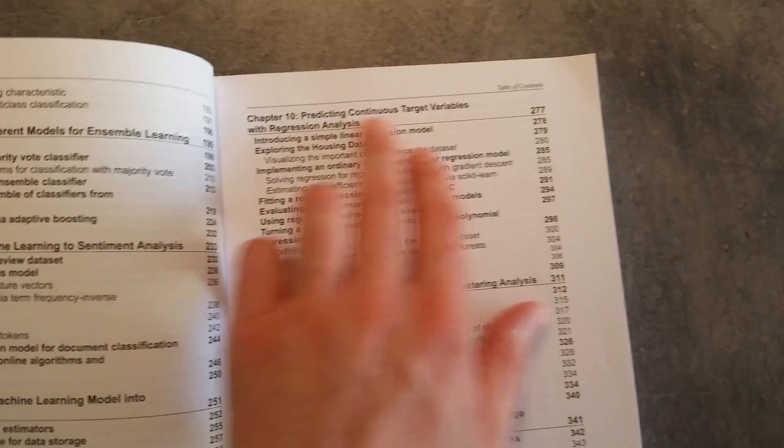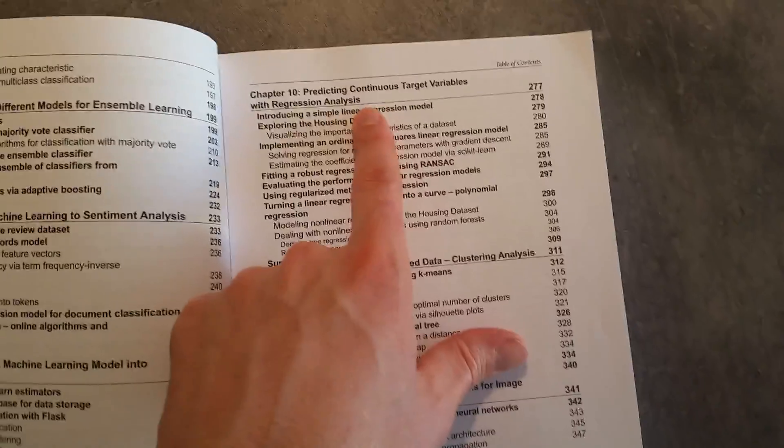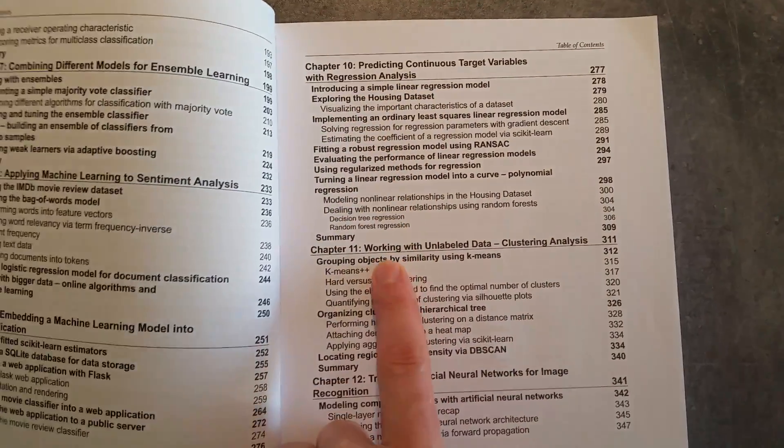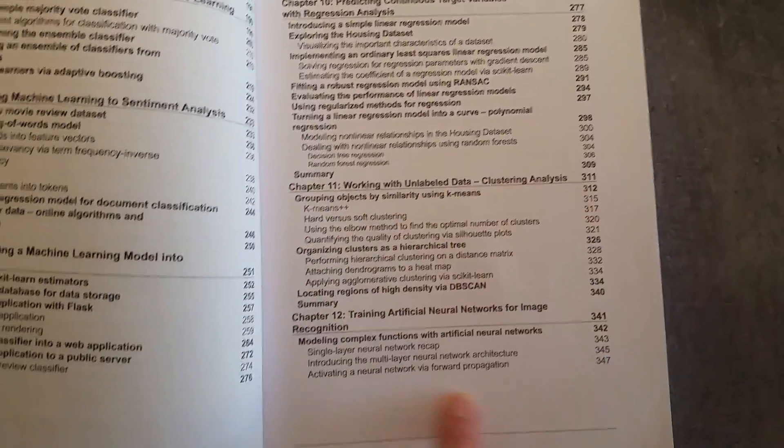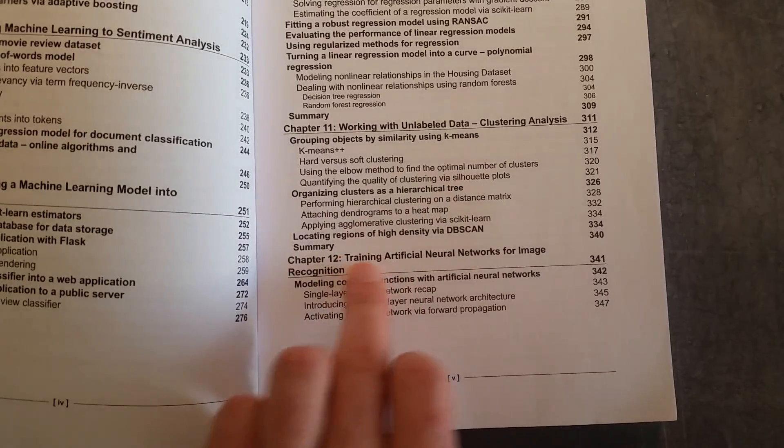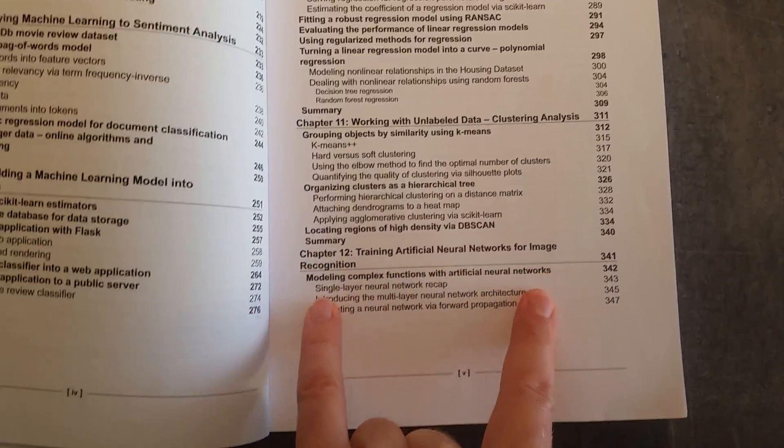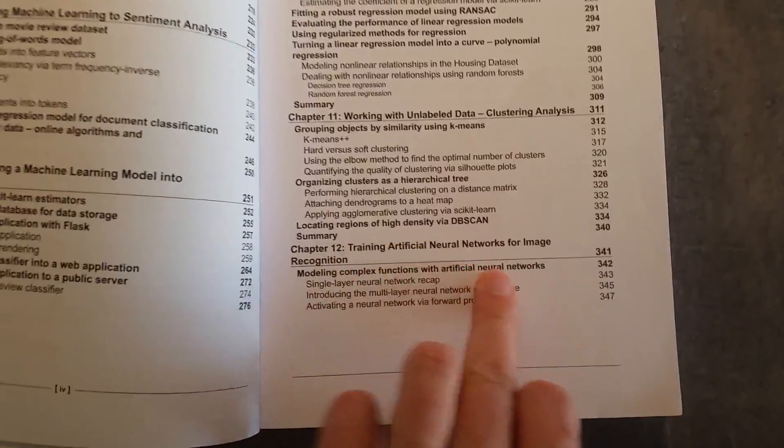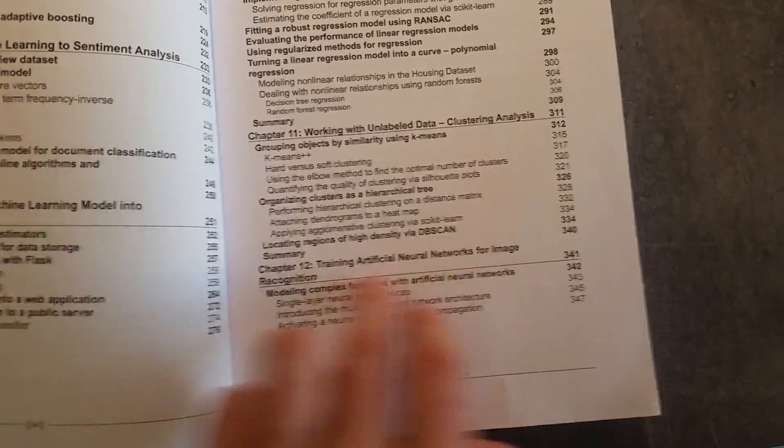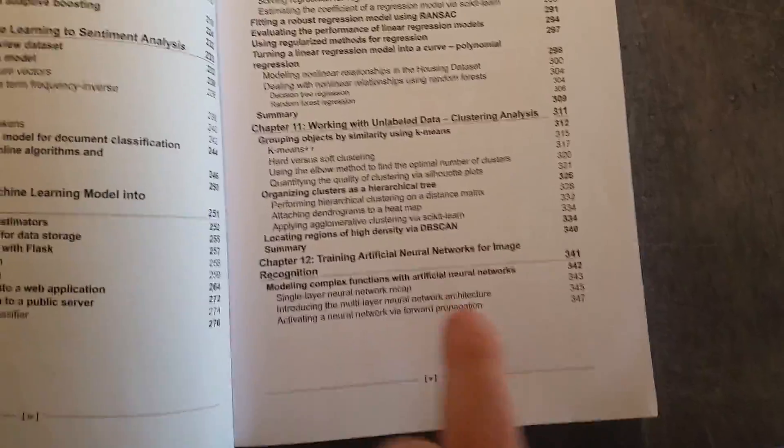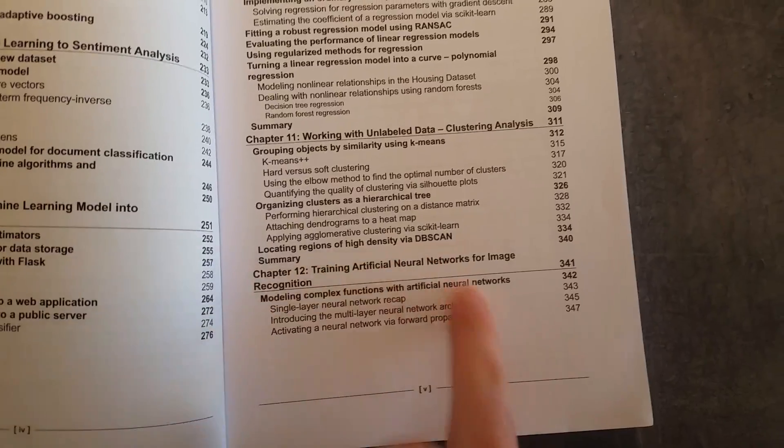And so on and so forth, predicting continuous target variables, regression analysis, working with unlabeled data, clustering analysis, and training artificial neural networks for image recognition. And I think artificial neural networks are a really interesting area. And this chapter goes into a little detail on how to apply them.